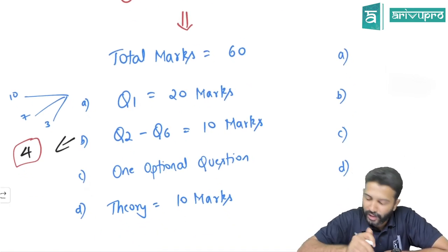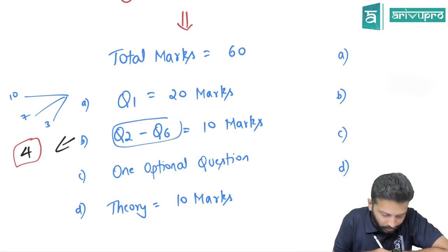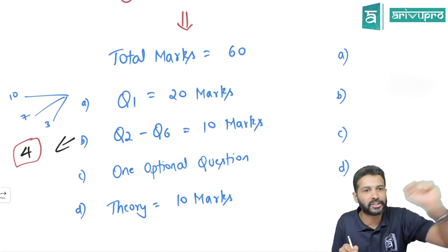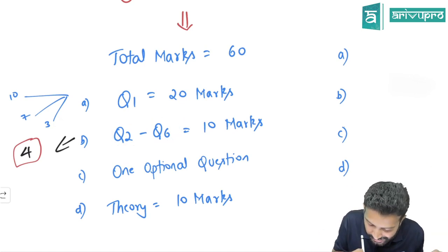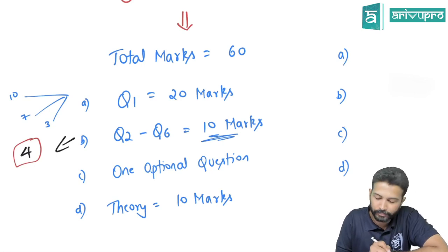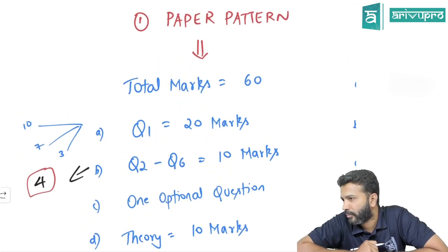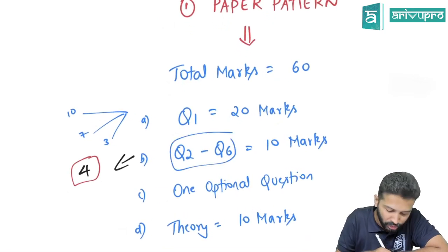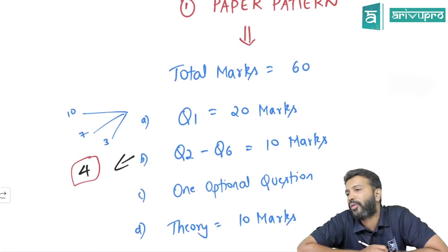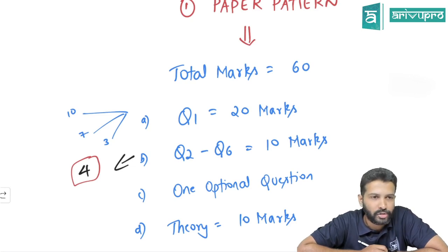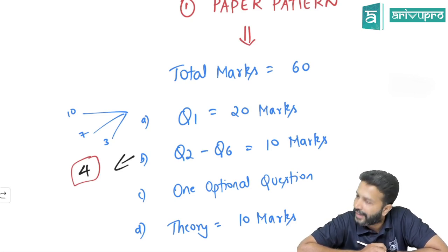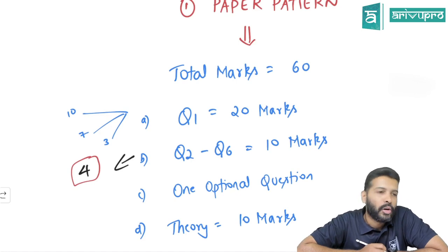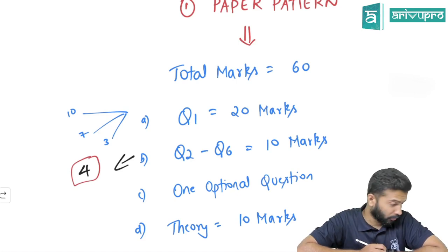In 60 marks, 20 gone, so 40 remains. You have five more questions - question 2 to question 6. Each question carries 10 marks. In these five questions, you need to answer only four, meaning you have a choice.